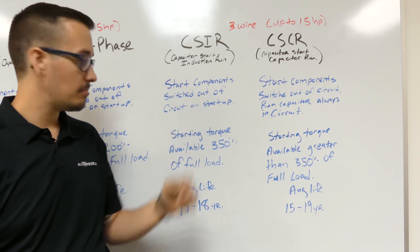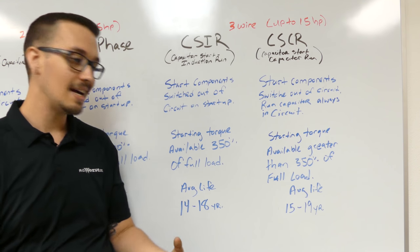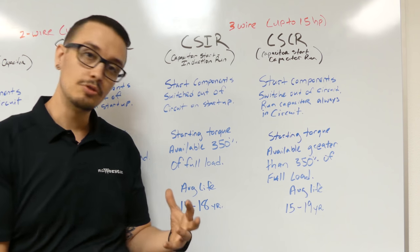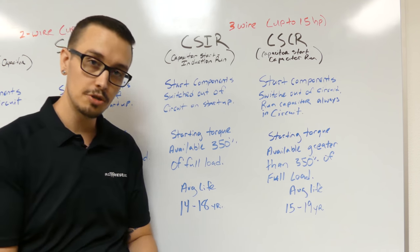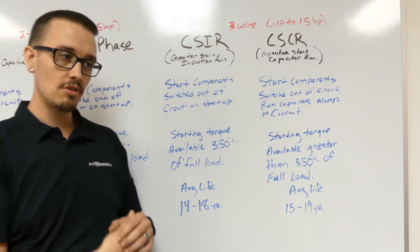So anyways, with the CSIR panel, your starting torque available is about 350% or less of full load. So that's definitely superior to the two wire pumps or motors that we just spoke of. And then the average life is 14 to 18 years generally.